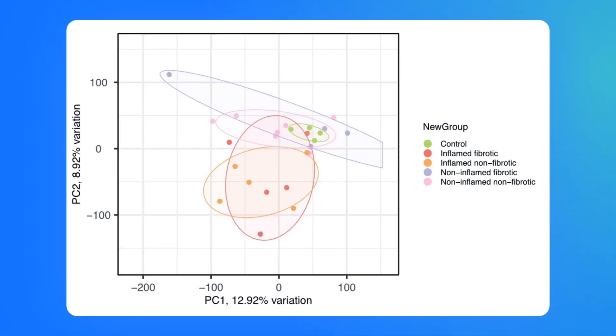In the first step, we performed principal component analysis. Here, each dot corresponds to the patient's sample. Principal component analysis demonstrates that patients with inflamed EOE cluster together, regardless of the presence or absence of fibrosis, and are separated from non-inflamed EOE and healthy controls.